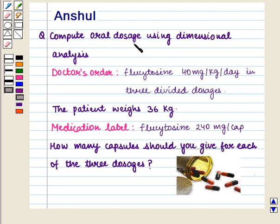Compute oral dosage using dimensional analysis where the doctor's order is Flucytocin 40 mg per kg per day in 3 divided dosages. The patient weighs 36 kg.